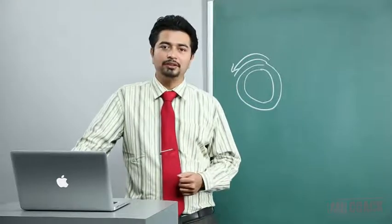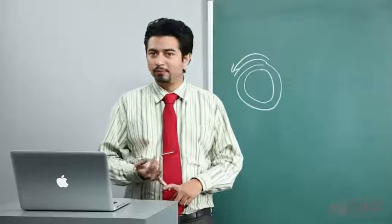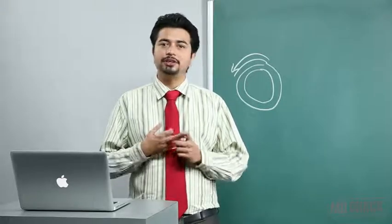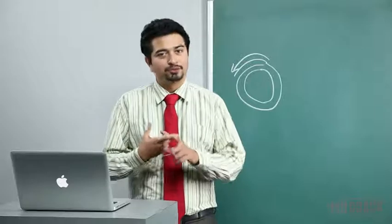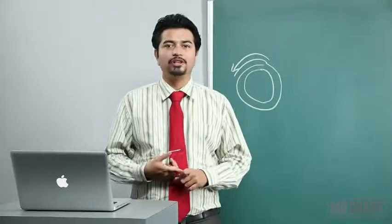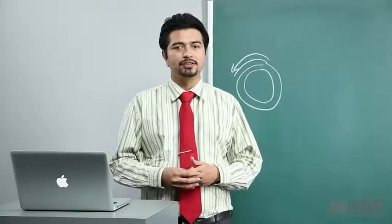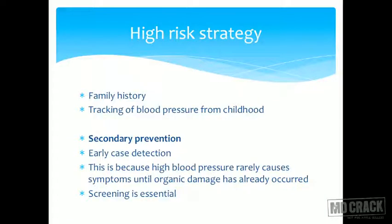The next strategy is high risk strategy. High risk groups - try to remember what were the high risk groups for hypertension. These would be population who are old, population who smokes, population who has family history of hypertension, population who has been marked as HRG on the tracking. So what do we do? We then apply secondary prevention.